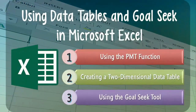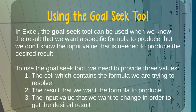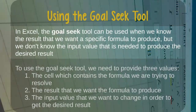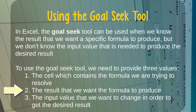Now that we know how to create and use data tables in Microsoft Excel, let's learn how to use Excel's Goal Seek feature. In Excel, the Goal Seek tool can be used when we know the result that we want a specific formula to produce, but we don't know the precise input value needed to produce the desired result. Excel can solve these sorts of problems, but to do so we need to provide it with three input values: first, a reference to the cell containing the formula we are trying to resolve; next, the desired output value we want the formula to produce; and finally, which input value Excel should change in order to get the formula to produce the desired result.